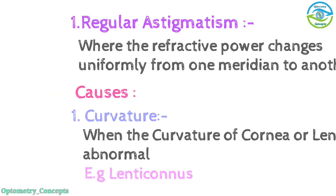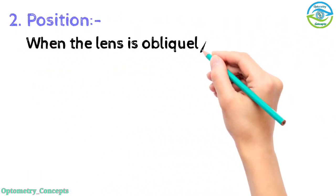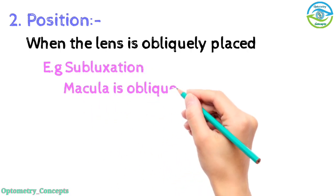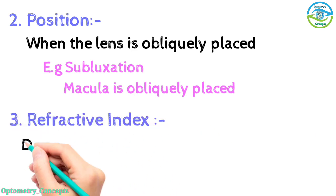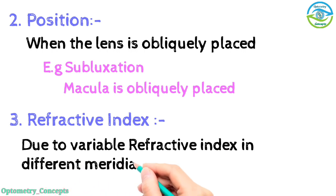Lenticonus. Position - when the lens is obliquely placed, subluxation. Macula is obliquely placed. Refractive index - due to variable refractive index in different meridians.